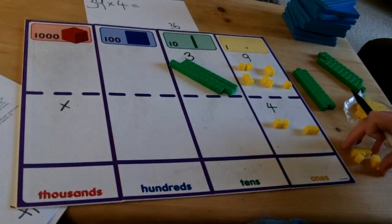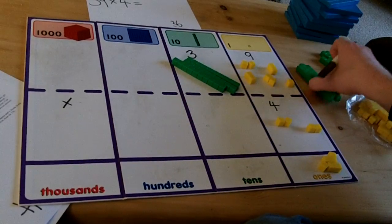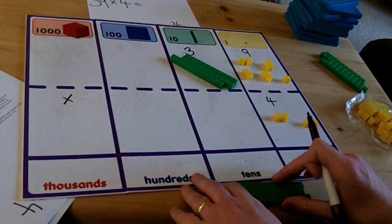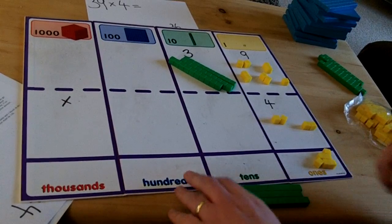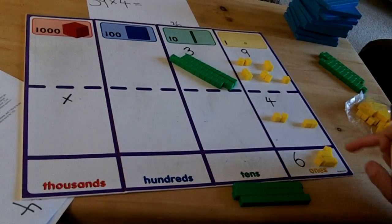The 6 cubes here go into the answer part of the ones column. However the 3 tens that I have got here must go underneath the answer section to remind me to add them on in the next step. I am going to write a 6 here to show the 6 cubes here.